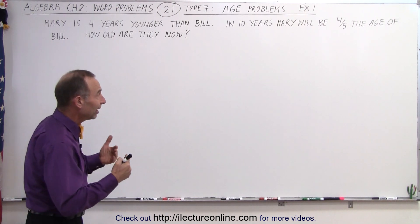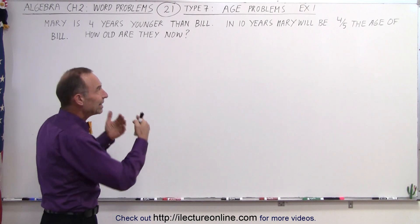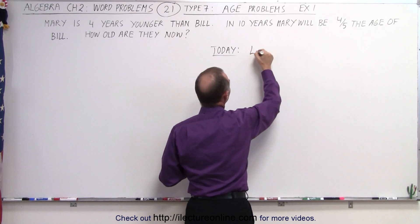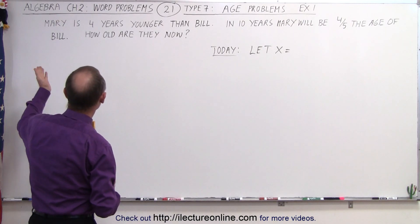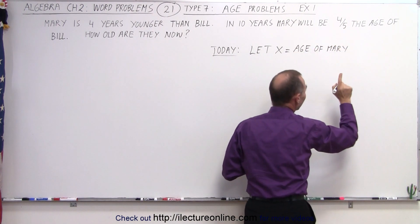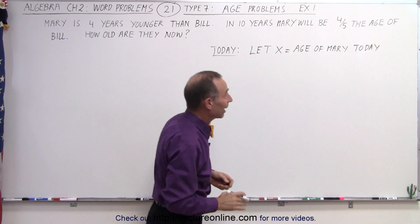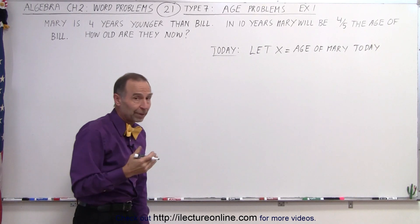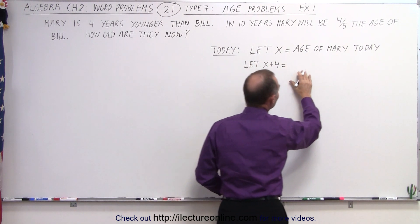What we need to do is find some relationship between x and their ages today, and then do it again 10 years in the future. We start with today: let x equal the age of Mary today — not 10 years from now. If x is the age of Mary, and Mary is four years younger than Bill, then Bill must be four years older than Mary. So let x plus four equal the age of Bill today.